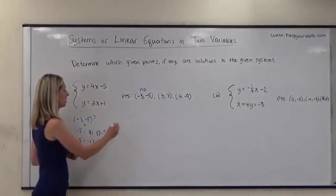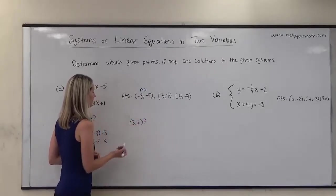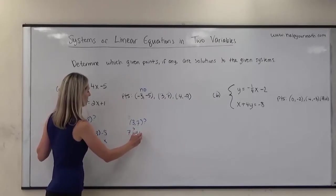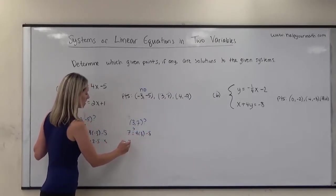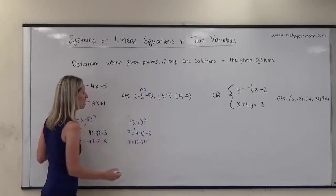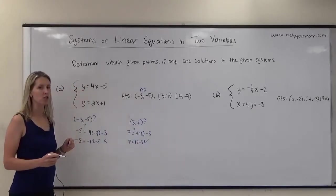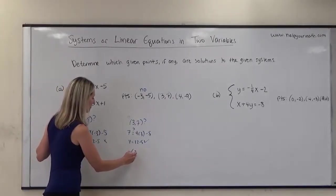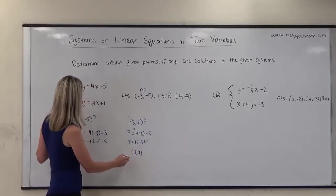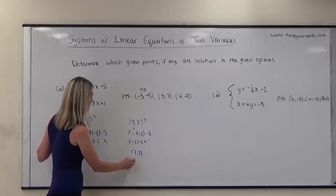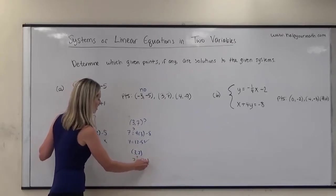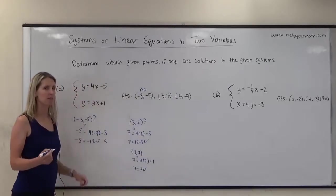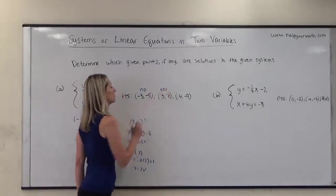Next, we're going to plug in 3, 7. Is 3, 7 a solution to the system? Does 7 equal 4 times 3 minus 5? So, 7 equals 12 minus 5 — yes, that's true. Because it works for the first equation, we need to check the second equation. Does 7 equal 2 times 3 plus 1? Does 7 equal 7? Yes, it does. So 3, 7 is a solution to the system of equations.